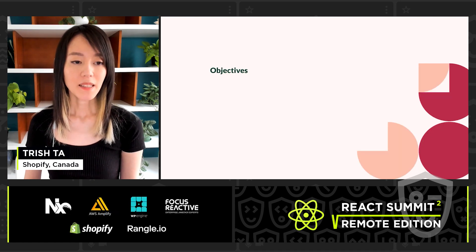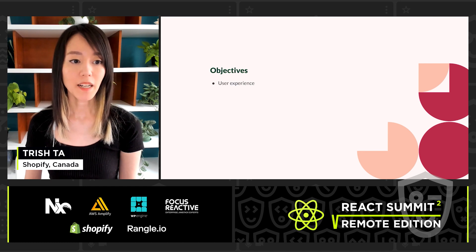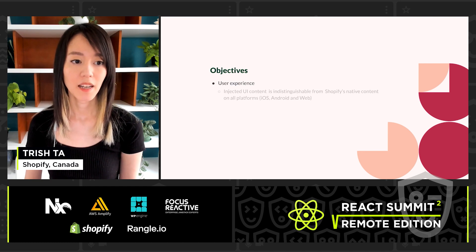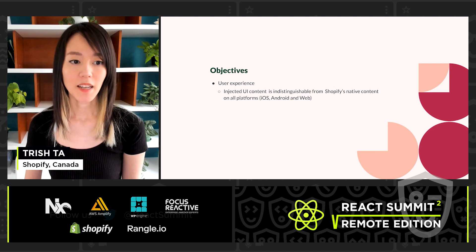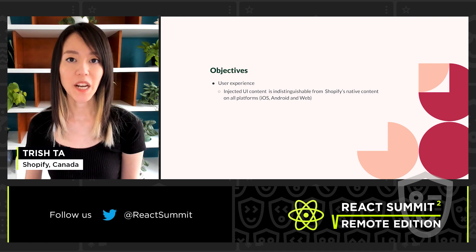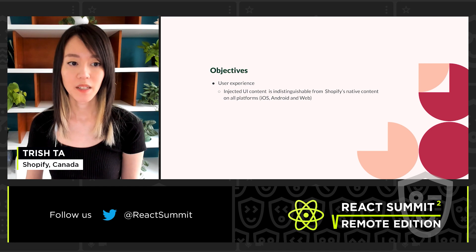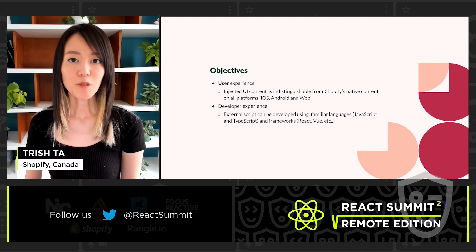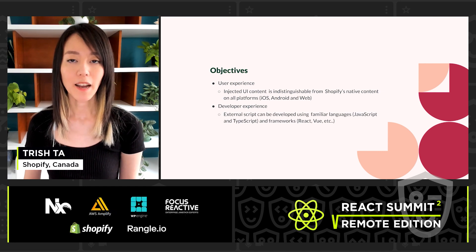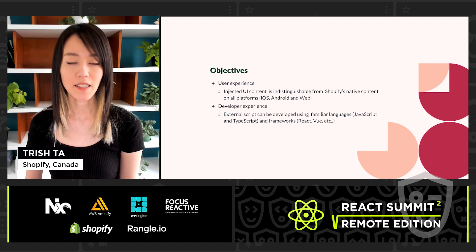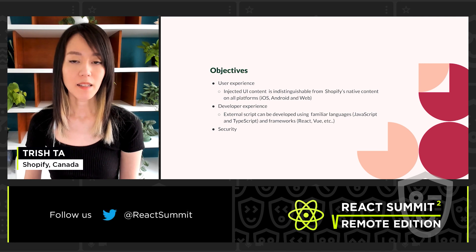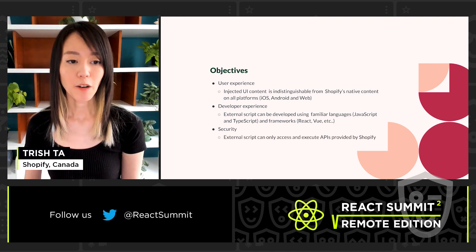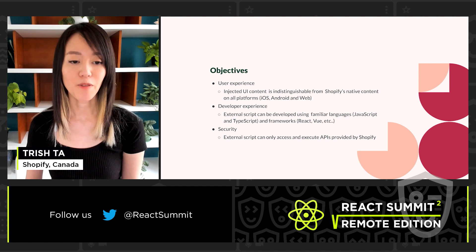The objectives we were trying to achieve are to provide a good user experience — injected UI content is indistinguishable from Shopify's own native content on all platforms. We wanted to provide a good developer experience, so external scripts can be built using familiar languages like JavaScript and TypeScript, and frameworks like React or Vue. And we also wanted to provide a security layer, where the external script can only access and execute APIs provided by Shopify.